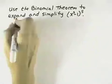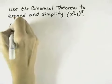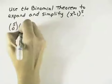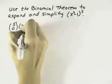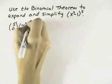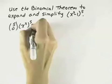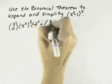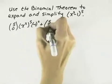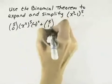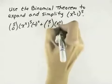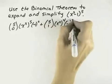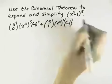So 5 is the first value, so for our first term we'll have C(5, 0), and then our first term within our parentheses, x squared, will be to the fifth power, and our second term, which is negative 1, will be to the 0 power. Then we have C(5, 1), moving on to the next term. Our x squared is now to the fourth power, and our negative 1 is increasing to the first power.